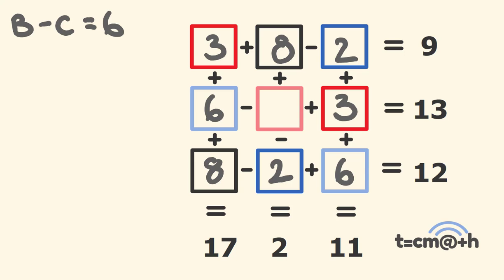Lucky last, we can work out what E is equal to. And this one's a bit of a harder one. 6 take away a certain number, plus 3 is equal to 13. It's going to have to be negative 4. 6 subtract negative 4 is 10, plus 3 is 13.